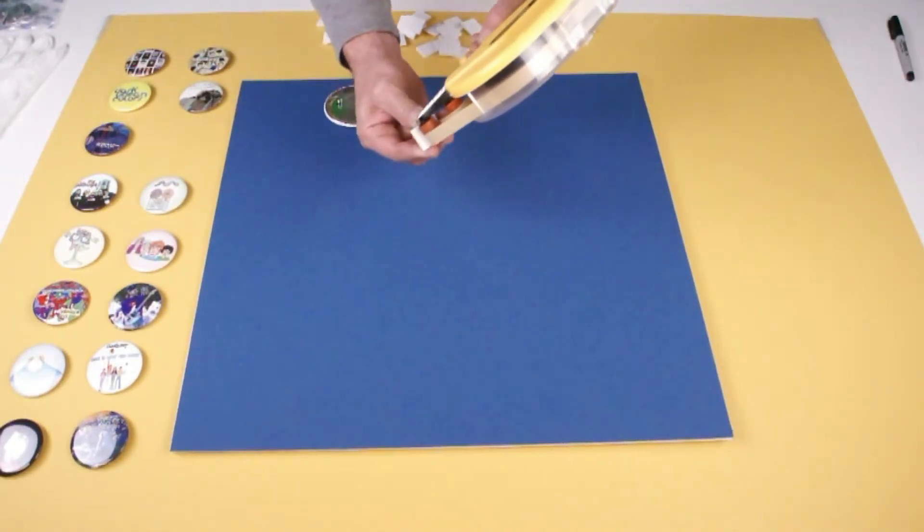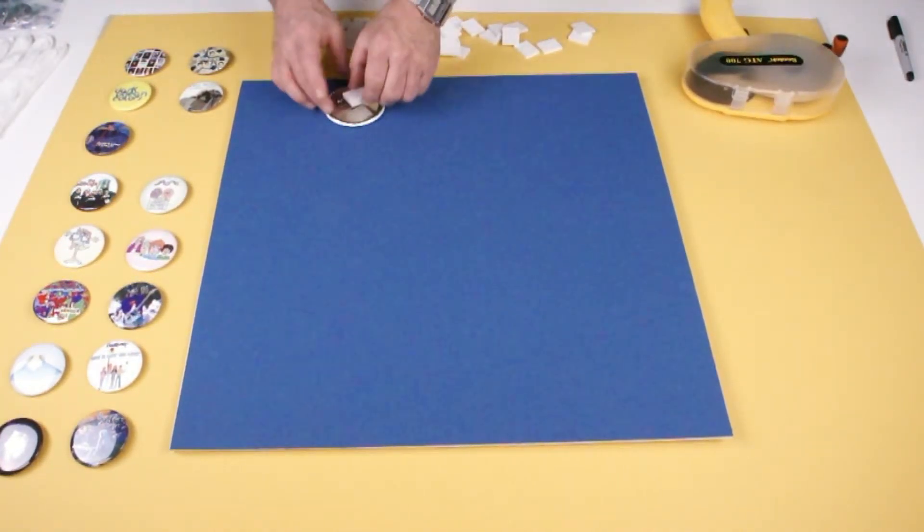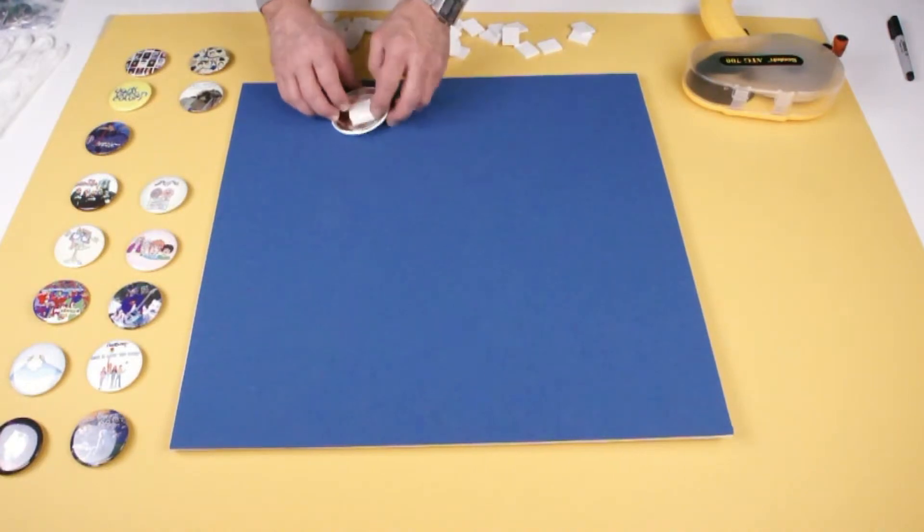Take two foam squares and adhere them together. Put adhesive on the front and back of the foam squares, then push it firmly on the back of your button.